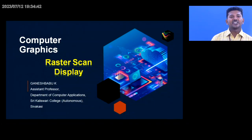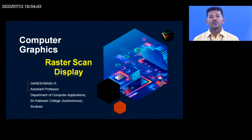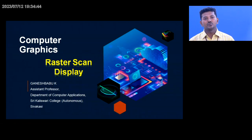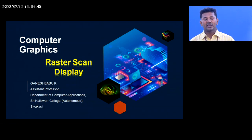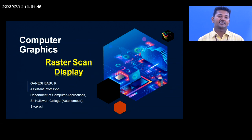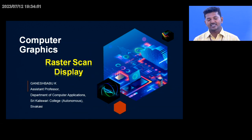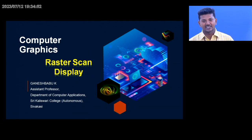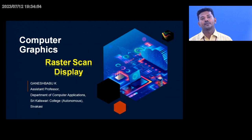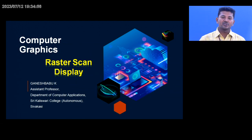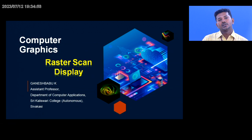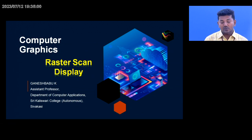Good morning. Today we are going to talk about computer graphics. In computer graphics there are two types of display: the first one is a raster scan display and the second one is a random scan display. Today we are going to talk about raster scan display. So let's move on to the slide.